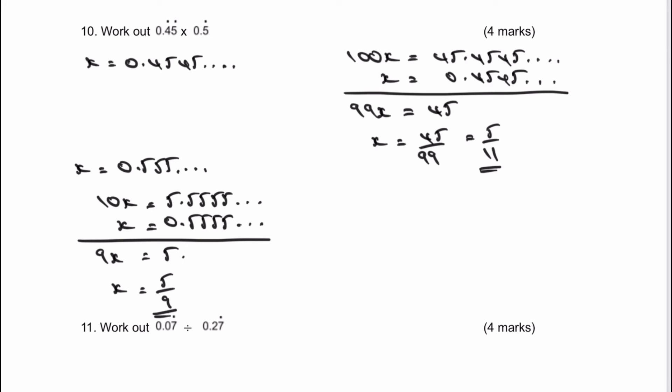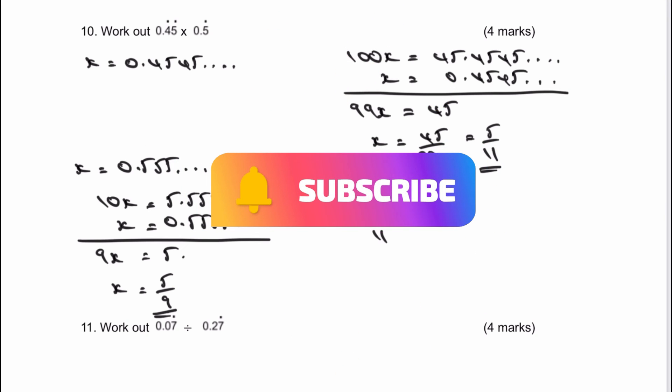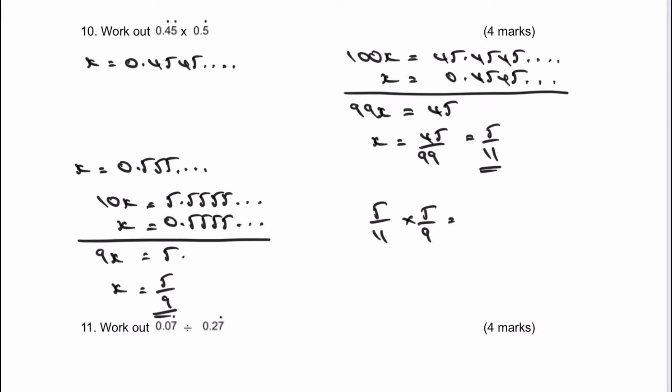So now I've got two fractions that I can just simply multiply together. My first one is 5 over 11, which I worked out, multiplied by 5 over 9. That's going to give me an answer of 25 over 99, which is the answer to this particular question.